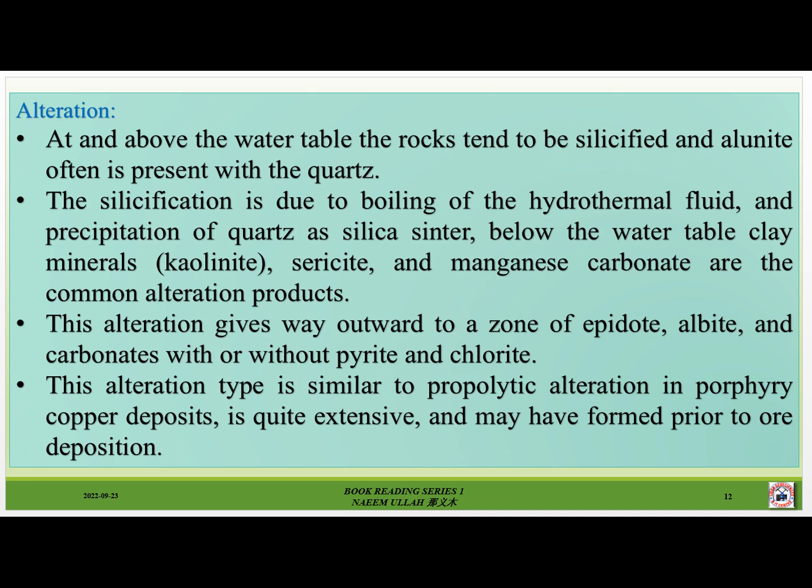Alteration. At and above the water table, the rocks tend to be silicified and alunite often is present with the quartz. The silicification is due to boiling of the hydrothermal fluid and precipitation of quartz as silica sinter. Below the water table, clay minerals, kaolinite, illite and manganese carbonate are the common alteration products. This alteration gives way outward to a zone of epidote, albite and carbonates with or without pyrite and chlorite. This alteration type is similar to propylitic alteration in porphyry copper deposits, and is quite extensive, and may have formed prior to ore deposition.